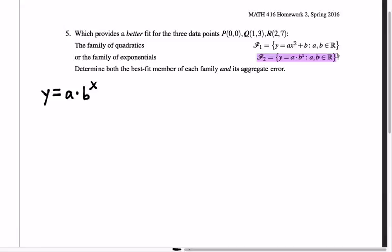If I just plug these three points into y equals a times b to the x, I'm going to get 0 equals a times b to the 0, and 3 equals a times b to the 1, and 7 equals a times b to the 2. And then I have to somehow solve using least squares method this system of equations, but this is not even a linear system of equations.